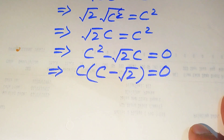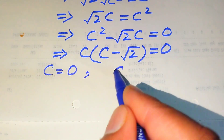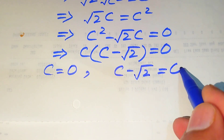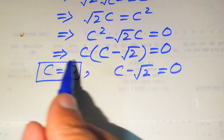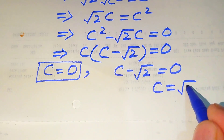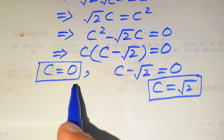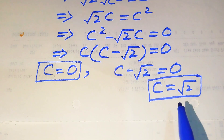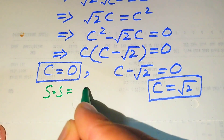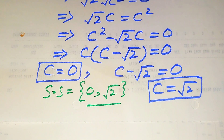We divide into two cases. The first case gives c equals zero, and the second case, c minus square root of two equals zero, gives c equals square root of two. From the second method we get two roots of the given equation. Since we already verified in the first method that both roots satisfy the original equation, the solution set from the second method is zero and square root of two.